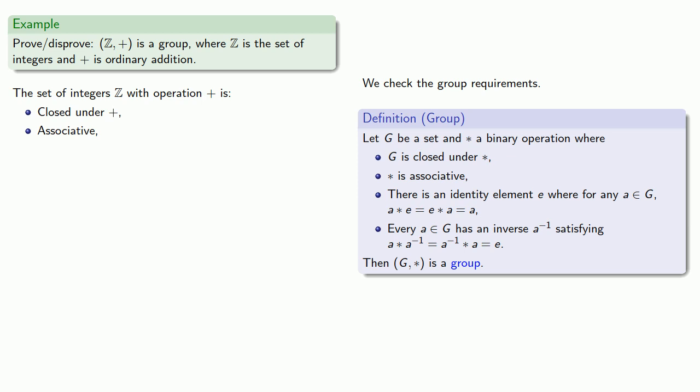We need to find an identity element. We need an element E where for any integer P, we have P plus E equals what we started with, and also E plus P gives us P. The integer zero satisfies this property, and so our set of integers has identity zero.